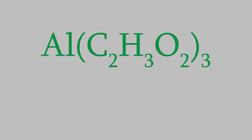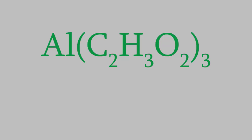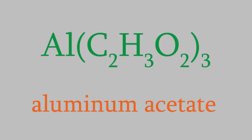Here's another example. The polyatomic ion is acetate, so this molecule would be called aluminum acetate.